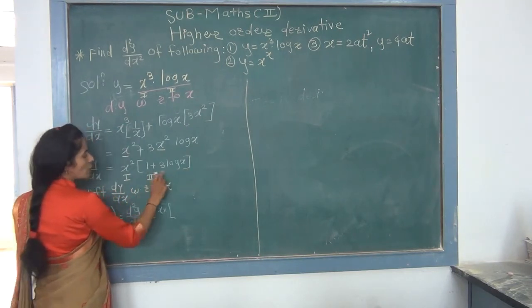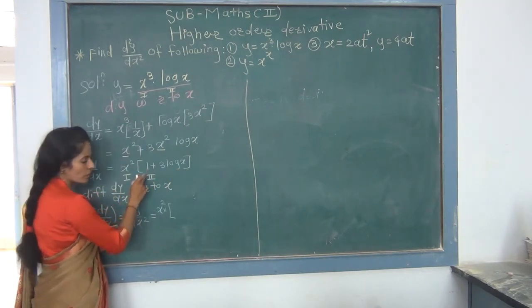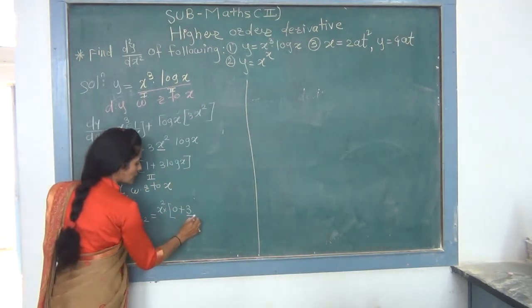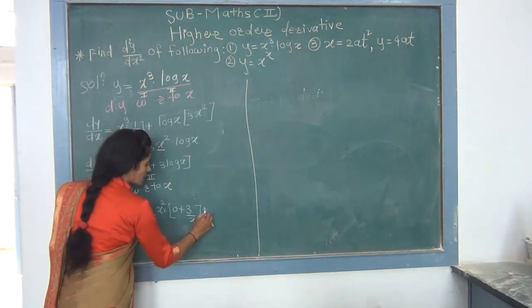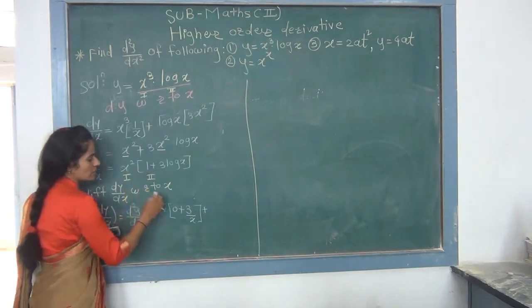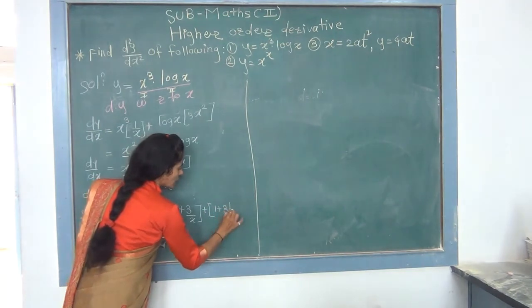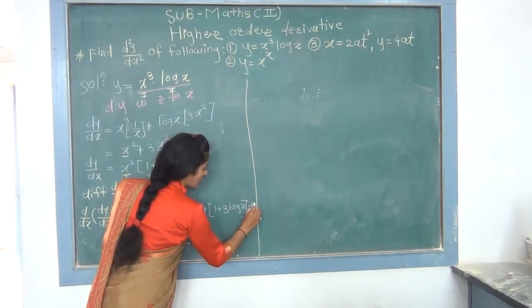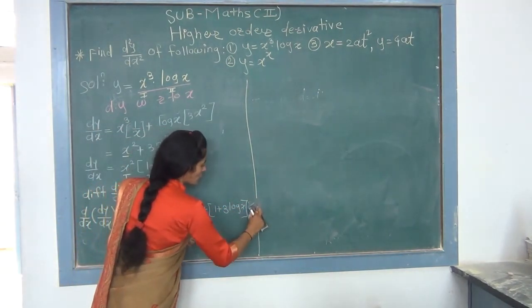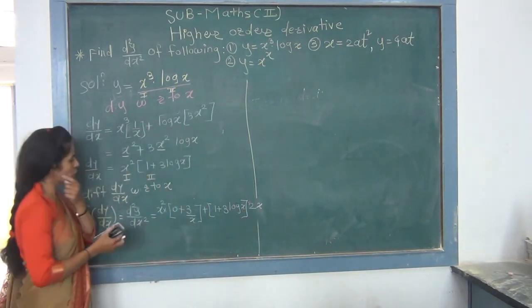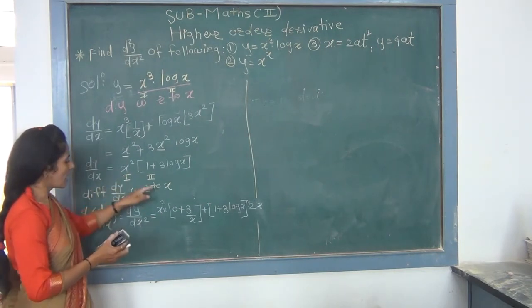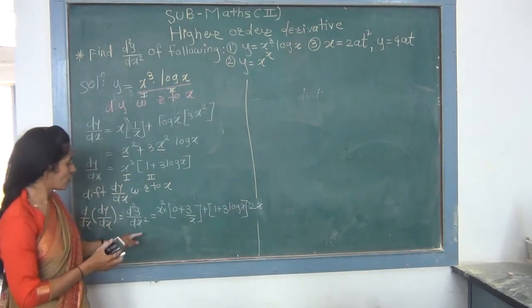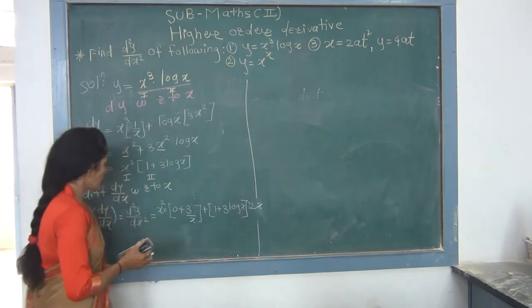So the analysis is: first find dy/dx using logarithmic differentiation, then differentiate dy/dx with respect to x again to get d²y/dx². We start: given y = x^x (equation 1), take log on both sides. We get log(y) = log(x^x). Applying the exponent rule of logarithm — log(a^k) = k·log(a) — this becomes log(y) = x·log(x).